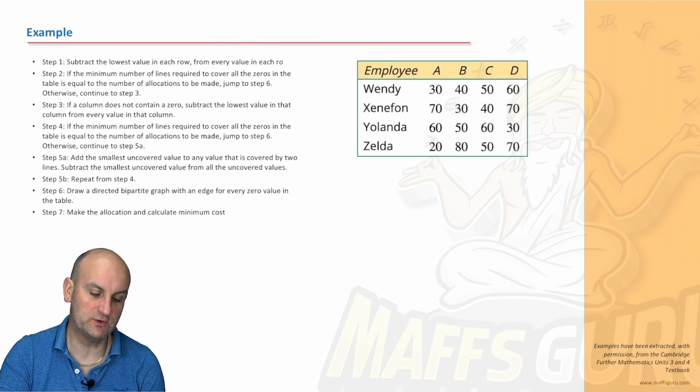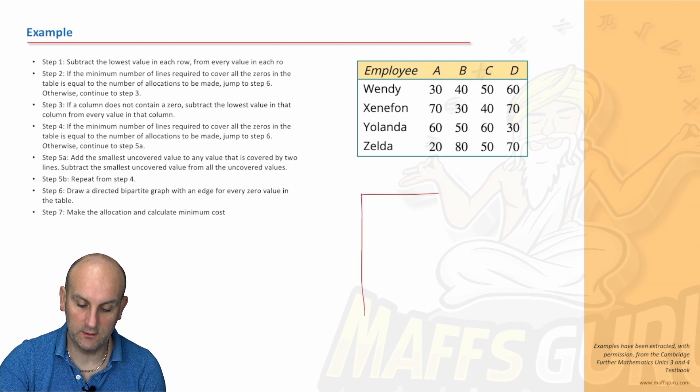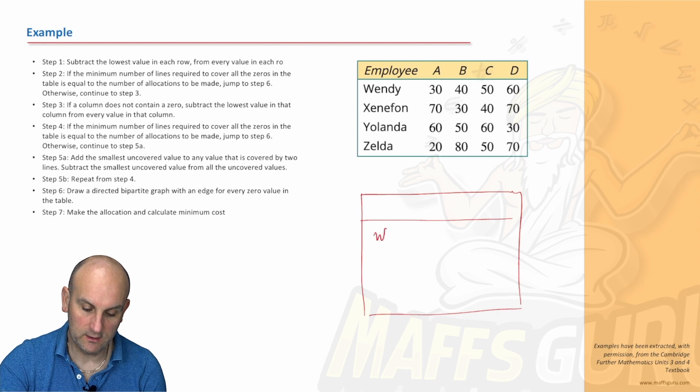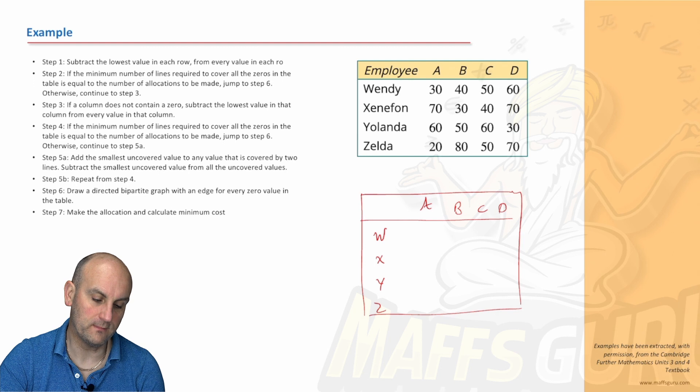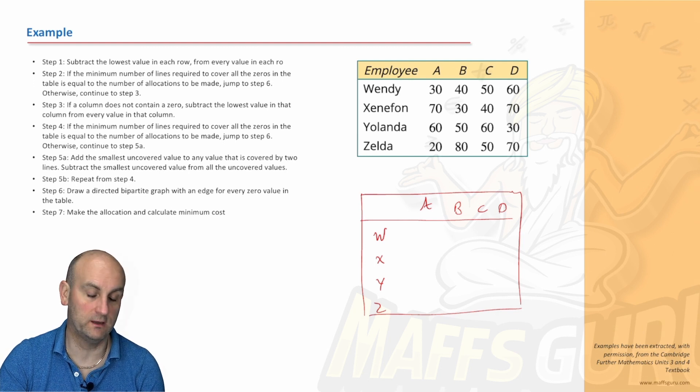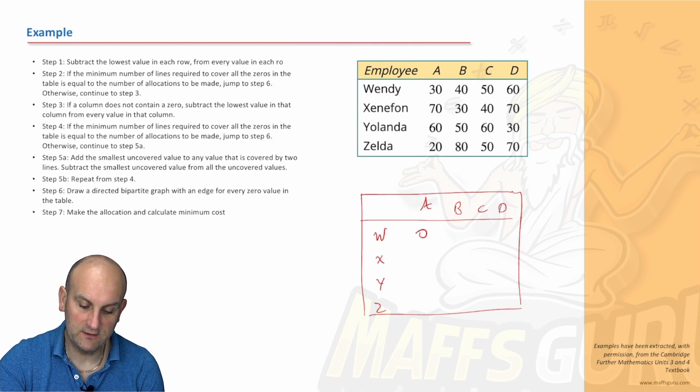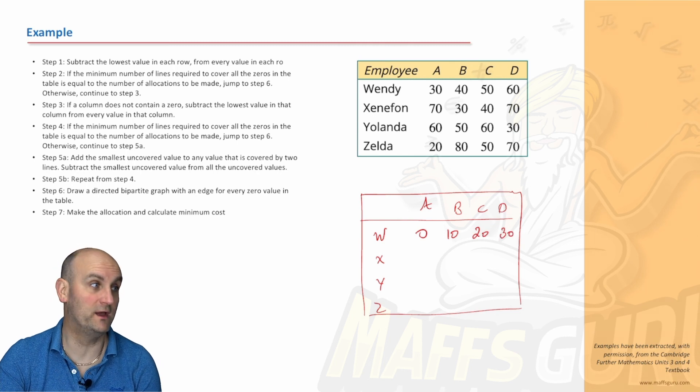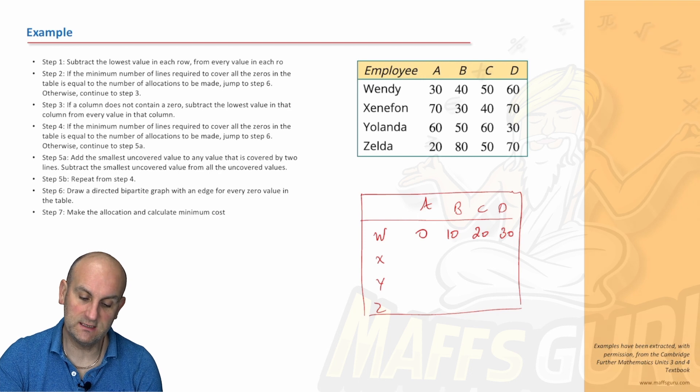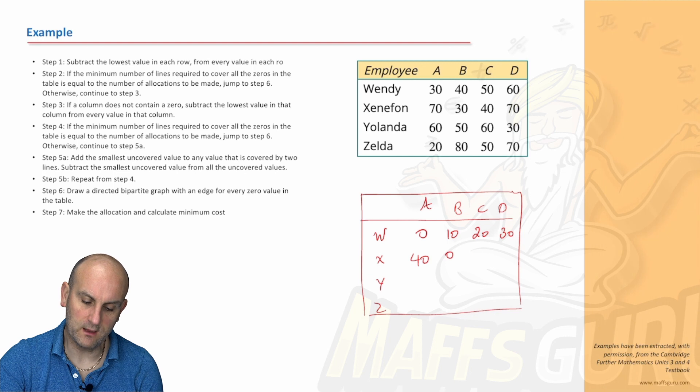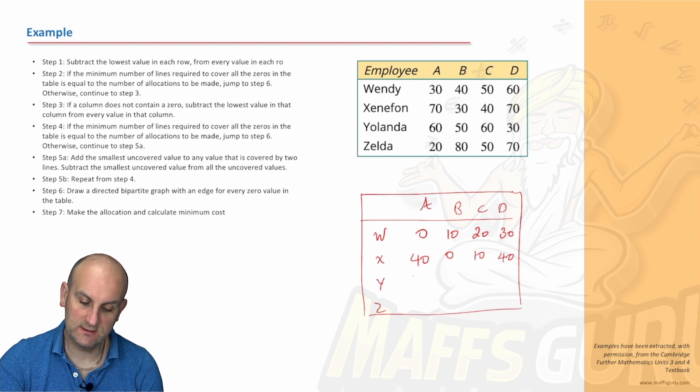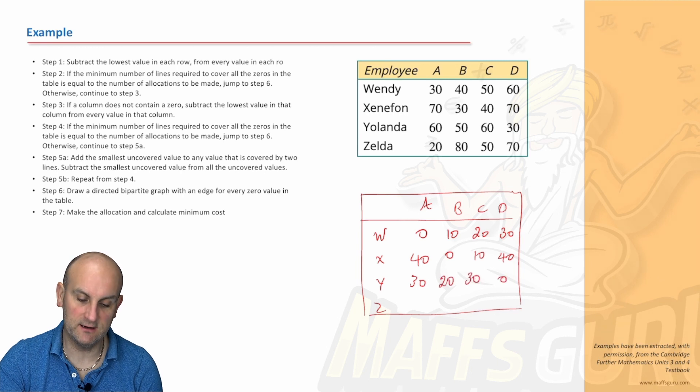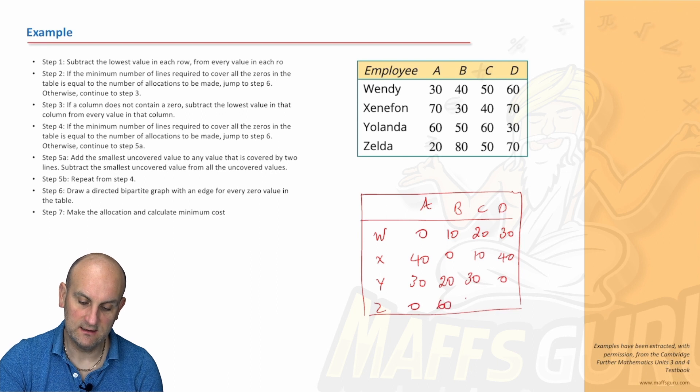So we're going to start off with step number one. Subtract the lowest value in each row from every value in each row. So what we're going to do is draw it back out very quickly. So I'm going to do W, X, Y and Z. And we've got A, B, C and D. So we're going to subtract the lowest number. The lowest value in each row from every value in each row. So if we look at Wendy's row, the lowest is 30. So we're going to take away 30 from each of those numbers 10, 20 and 30. So 0, 10, 20, 30. Let's look at Xenophon. What's her lowest number is 30. So take away 30 from each of those gives 40, 40, 0, 10 and 40. Y is 30 is the lowest. Take away 30, take away 30, take away 30. And we get 0. And 20 is the lowest there. So 0, 60, 30 and 40.